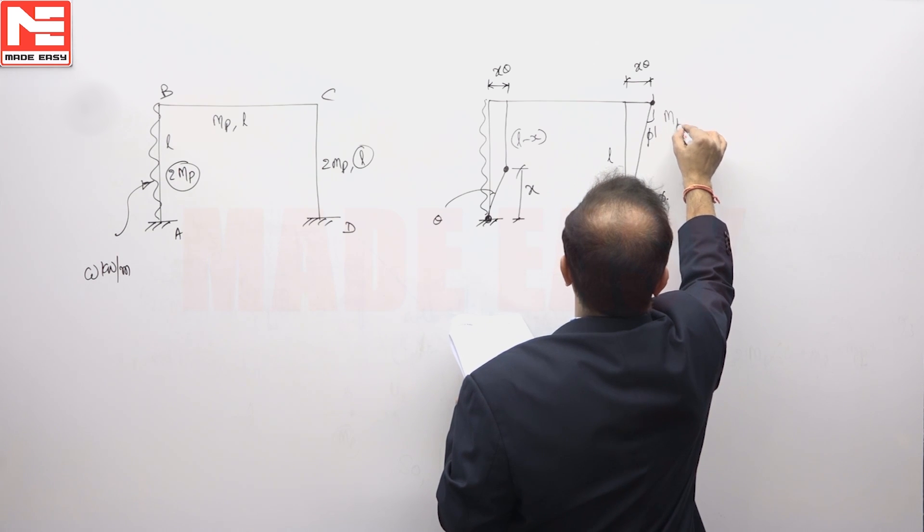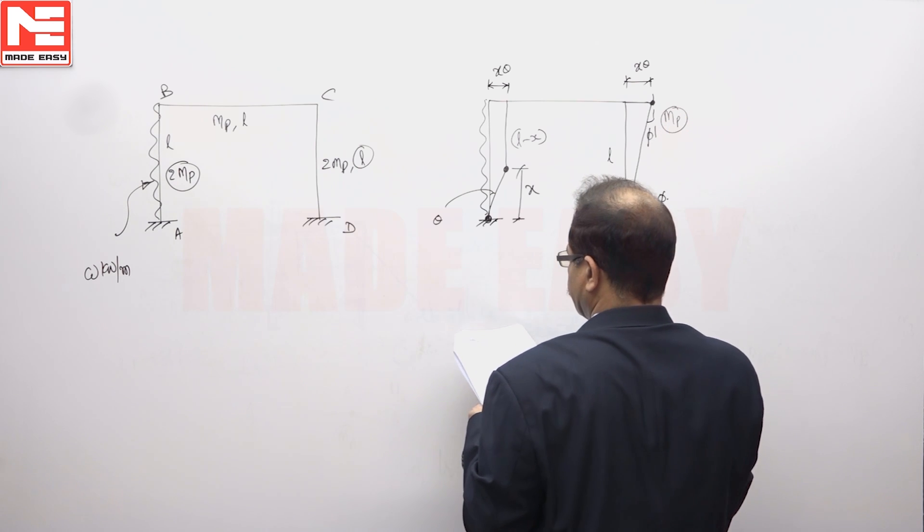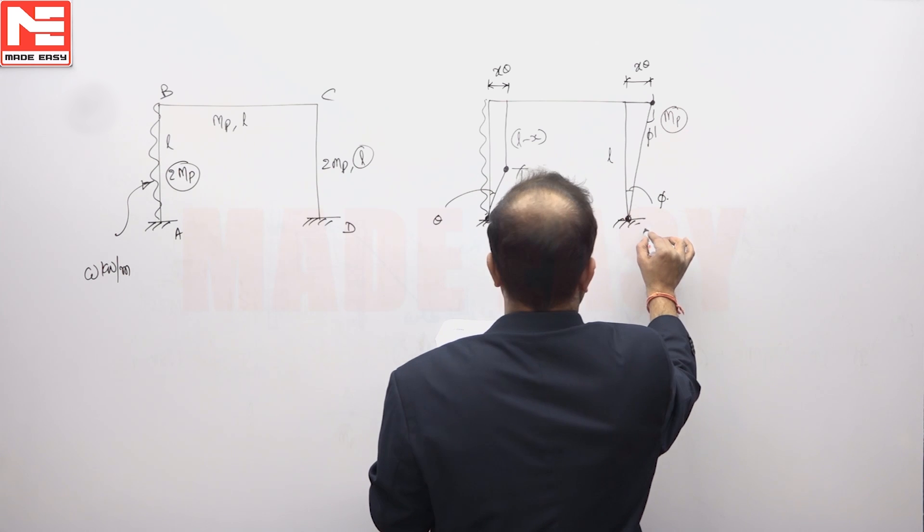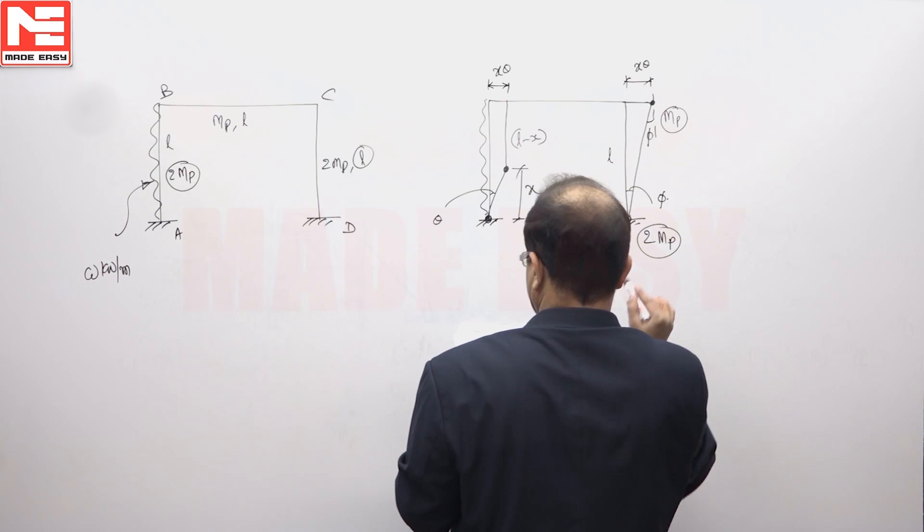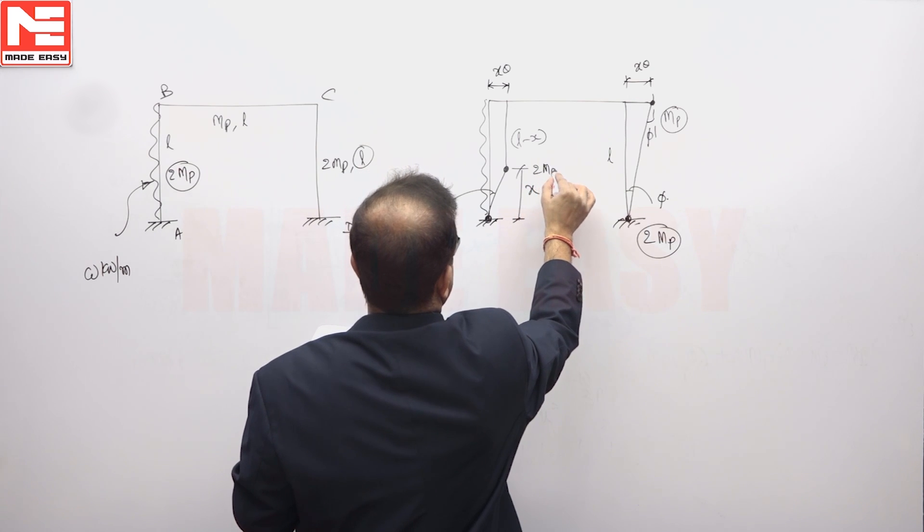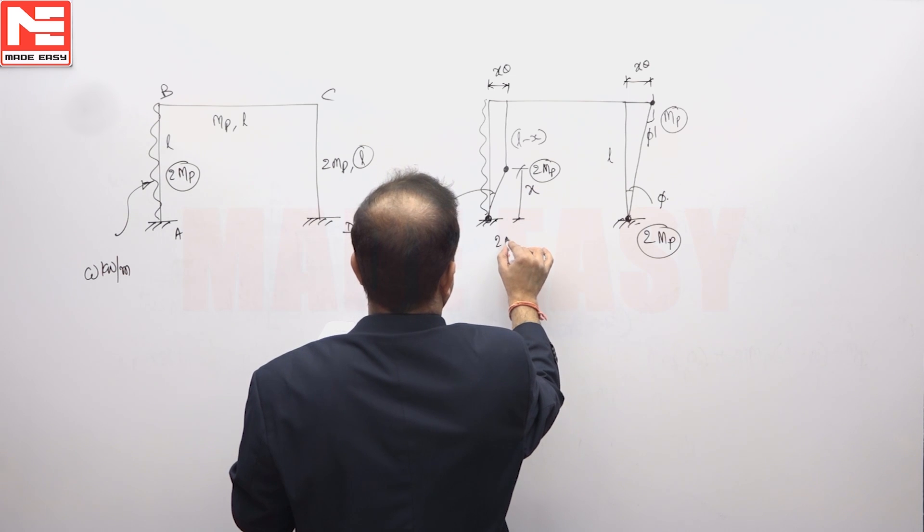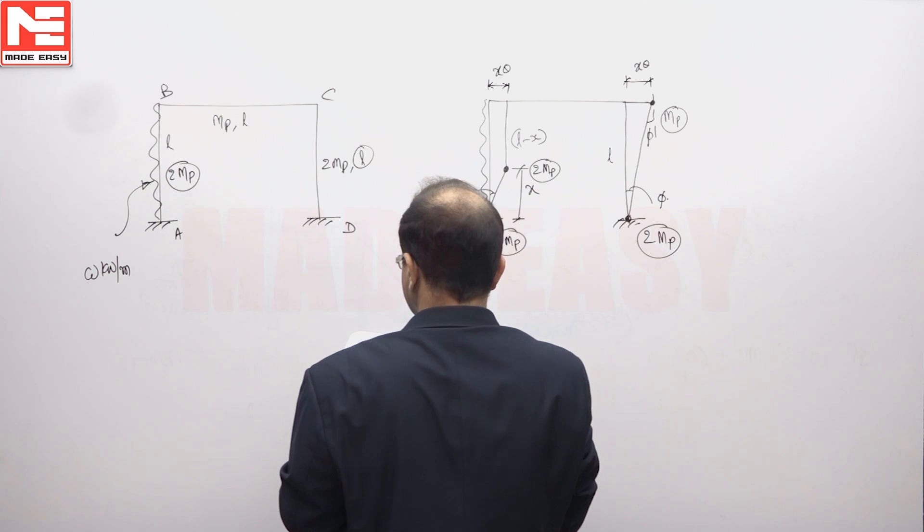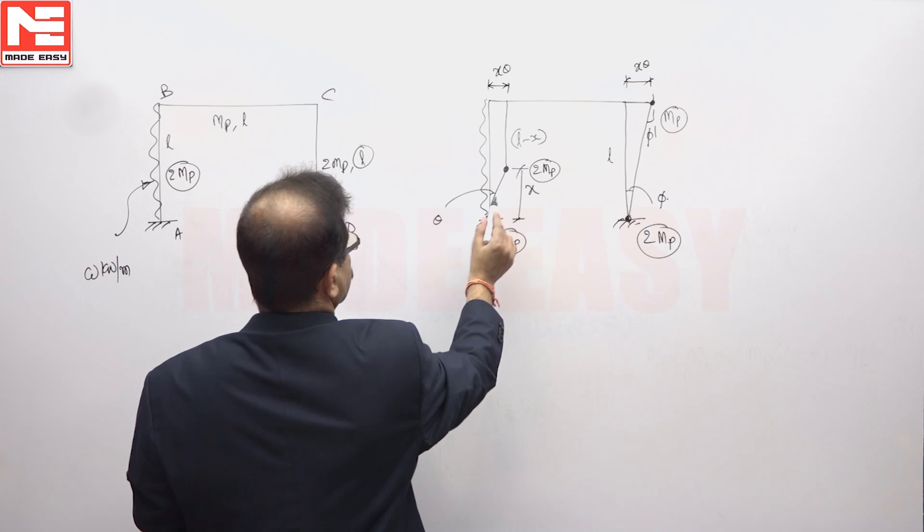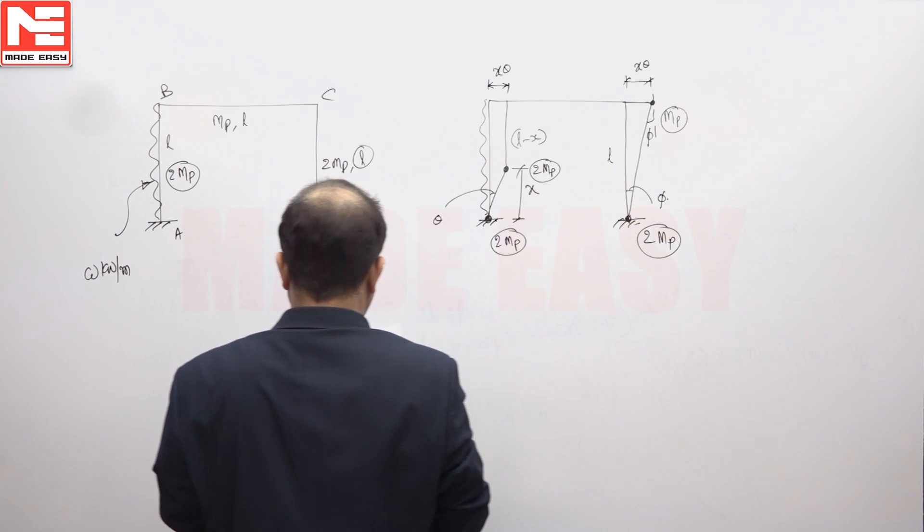So here you have got plastic moment capacity is MP here. Here also plastic moment capacity is 2MP, here it is 2MP, here it is also 2MP, L minus X and X.